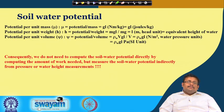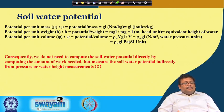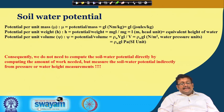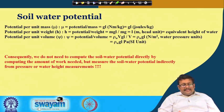Soil water potential can be expressed in three different ways: potential per unit mass, potential per unit weight, and potential per unit volume. Potential per unit mass, mu, is expressed in terms of joules per kg and is the multiplication of g (gravitational acceleration) and l (the water height).